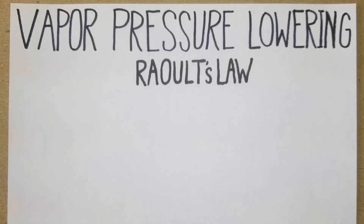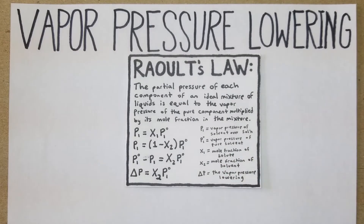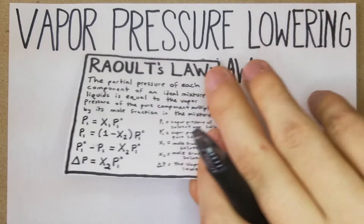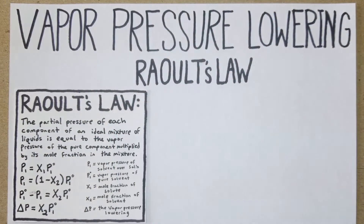In this video we're going to go over vapor pressure lowering problems — specifically how increasing a solution's concentration can lower the vapor pressure of that solution. We're going to use Raoult's Law as a colligative property. Raoult's Law states that the partial pressure of each component of an ideal mixture of liquids is equal to the vapor pressure of the pure component multiplied by its mole fraction in the mixture.